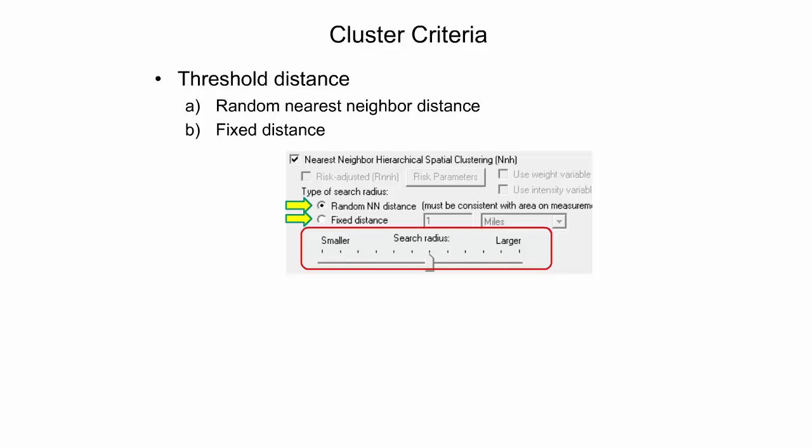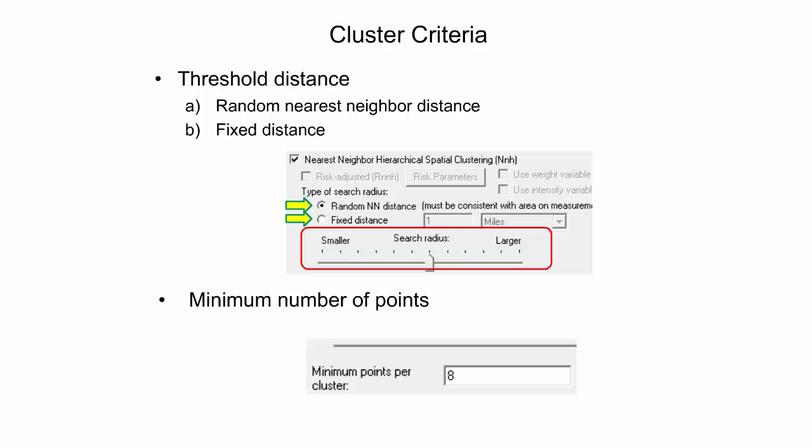The second alternative for selecting a threshold distance is to choose a fixed distance expressed in miles, nautical miles, feet, kilometers, or meters. The main advantage of this approach is that the search radius can be specified exactly. Whichever method is used for selecting a threshold distance, a second clustering criterion is the minimum number of points required for each cluster. This criterion is used to reduce the number of very small clusters. The settings for these parameters will have a major bearing on the way in which clusters are identified.